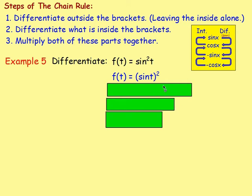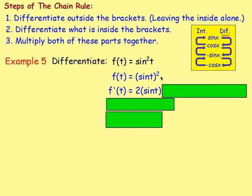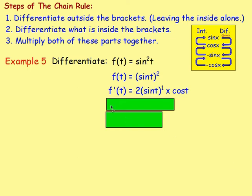We don't have t in the bottom of a fraction, we don't have any root signs, so we can go straight into differentiating. Bring the power down: that's going to become 2 sine t, and your power will decrease to the power of 1. Then multiply by the derivative of what's in the brackets: differentiate sine, that becomes cos, so it'll become cos t. That gives you 2 sine t cos t.